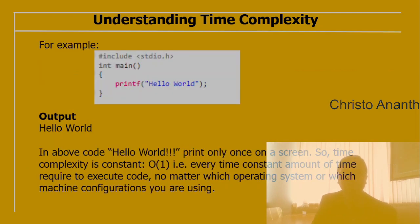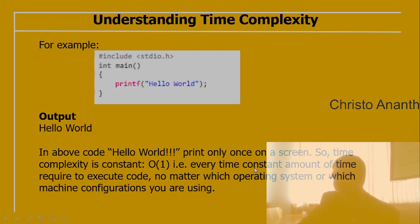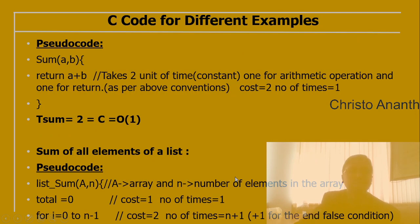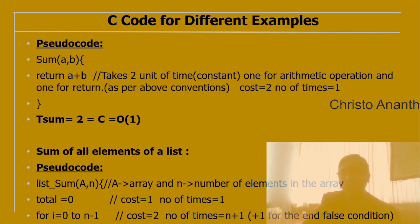For example, a simple program with printf("Hello World") prints once, so time complexity is constant — O(1). Every time a constant amount of time is required regardless of OS or machine configuration. For a function sum(a, b) returning a+b, it takes two units of time: one for the arithmetic operation and one for return. Cost = 2, times = 1, so T(sum) = 2, which is O(1).